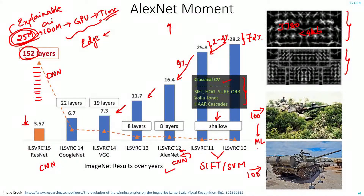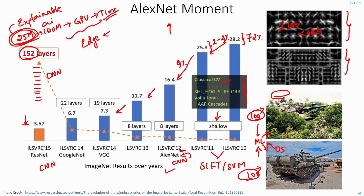The model worked perfectly — it worked so well that they started doubting it. So they collected more data and fed it to the model, but this time the model's response was pretty much random. When they went back and analyzed, they realized the 100 tank-behind-trees images were taken on a sunny day, and the 100 open images were taken on a cloudy day. The model had actually learned to predict whether the sky was cloudy or not — it had nothing to do with the tanks.